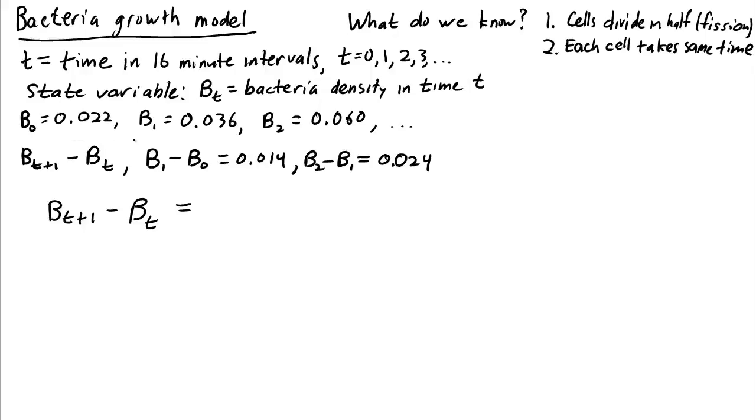But you can see that the population does not double. We went from 0.022 to 036, so up by 0.14. This is less than doubling. So it seems from this data that the bacteria take longer than 16 minutes to divide, or they take longer than one time step. So a bacteria doubling model isn't going to work here.